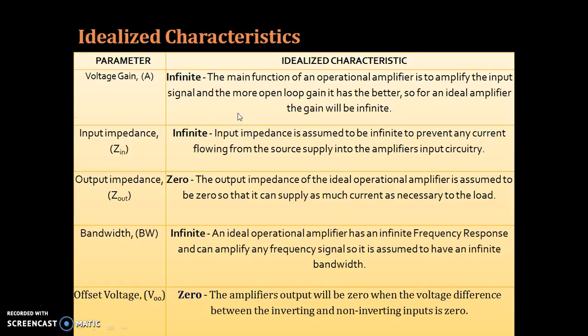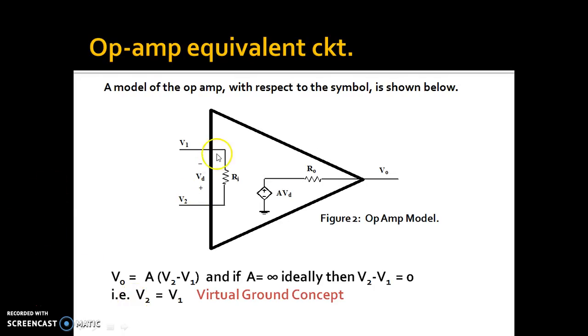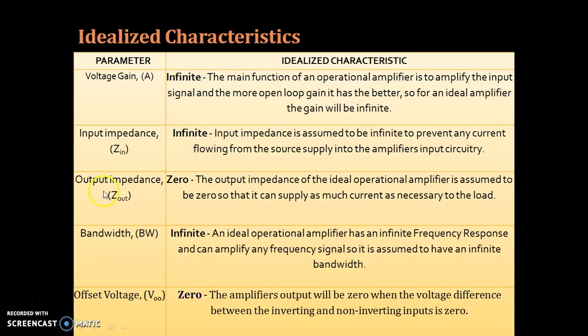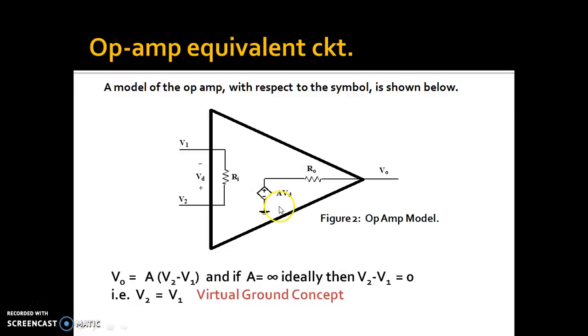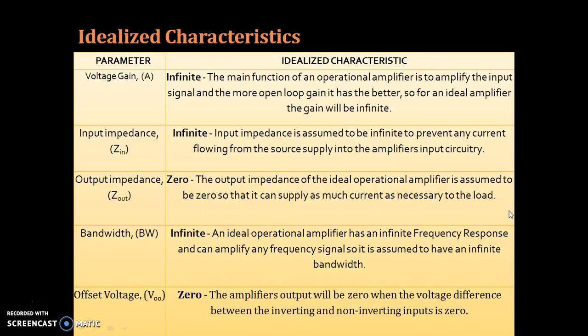There are different parameters based on which we can characterize an op-amp. In ideal case, these parameters are voltage gain, input impedance, output impedance, bandwidth and offset voltage. In ideal case, the voltage gain of the op-amp is infinite. Because the higher the voltage gain is the better the performance of the op-amp will be. The input impedance is infinite as it won't allow any input current to go into the input circuit of the op-amp. The output impedance is zero. That means the op-amp can supply all the current to the output load which is necessary for proper operation.